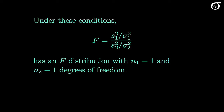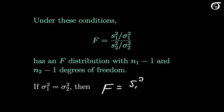If those assumptions are in fact true, then this quantity — s1 squared over sigma 1 squared, divided by s2 squared over sigma 2 squared — has an F distribution with n1-1 degrees of freedom in the numerator and n2-1 degrees of freedom in the denominator. We're going to use that fact to construct the appropriate confidence interval formula and the appropriate hypothesis test statistic. This simplifies if the population variances are equal, which is a common hypothesis we wish to test. If the population variances are equal, then sigma 1 squared and sigma 2 squared cancel out, and the F statistic simplifies to the ratio of sample variances, s1 squared over s2 squared, which has an F distribution with n1-1 and n2-1 degrees of freedom.